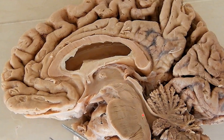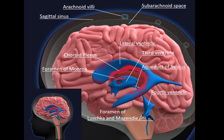In this dissected specimen, the pons is clearly visible. Behind the pons you can identify the upper pontine part and the lower medullary part of the floor. The right and left lateral ventricles communicate with the third ventricle through the interventricular foramen of Monroe. The third and fourth ventricles communicate through the aqueduct of Silvius. Anteriorly you can see the foramen of Lushka and posteriorly the foramen of Magendie.